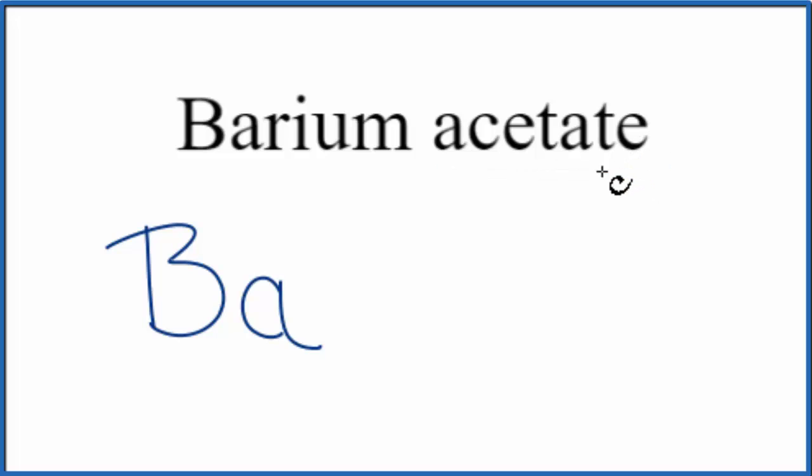You won't find the acetate on the periodic table. When we see things that end in -ate, that tells us that this is going to be a polyatomic ion. And you've either memorized the acetate ion, the formula for the acetate ion, or you can look it up. Let's look it up here.